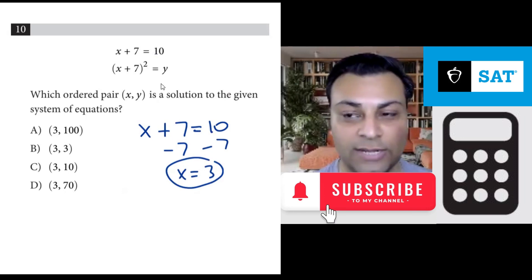The real question is what's the value of y? Now y equals x plus 7 squared. You can put a 3 in there if you like. You get 3 plus 7 squared equals y, and 3 plus 7 is 10, so 10 squared equals y, and 10 squared is 100. 10 times 10, and that's the answer. Y is 100, so that's option A.